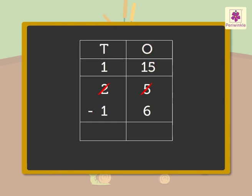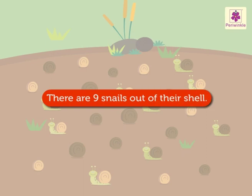Now, 15 1s minus 6 1s is equal to 9 1s. And, 1 10 minus 1 10 is equal to 0 10s. So, we get the answer as 9. Thus, there are 9 snails out of their shell.